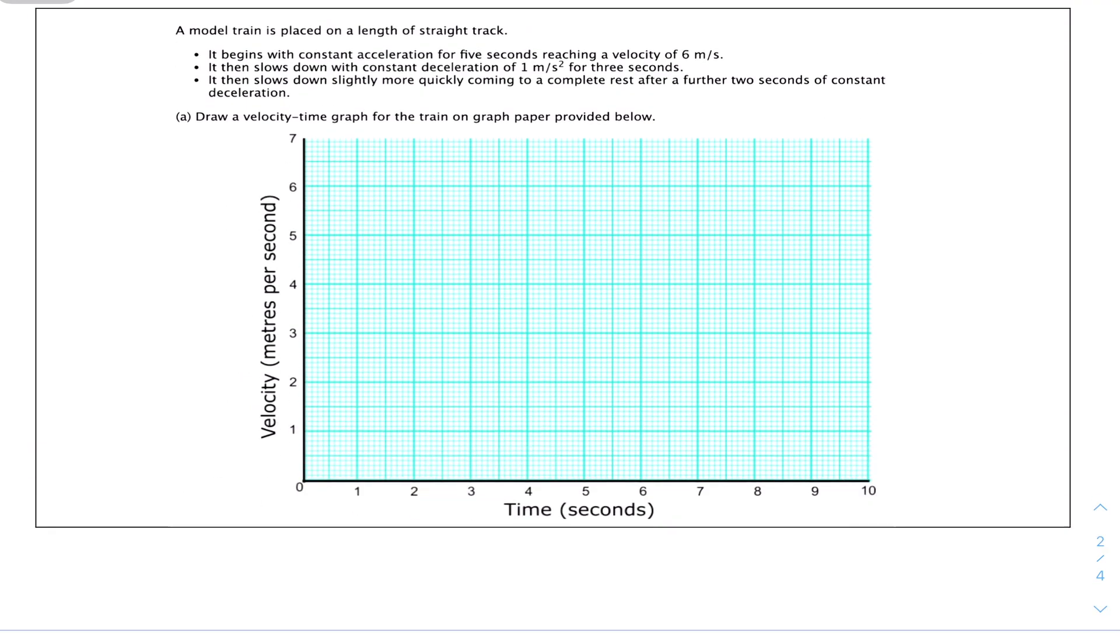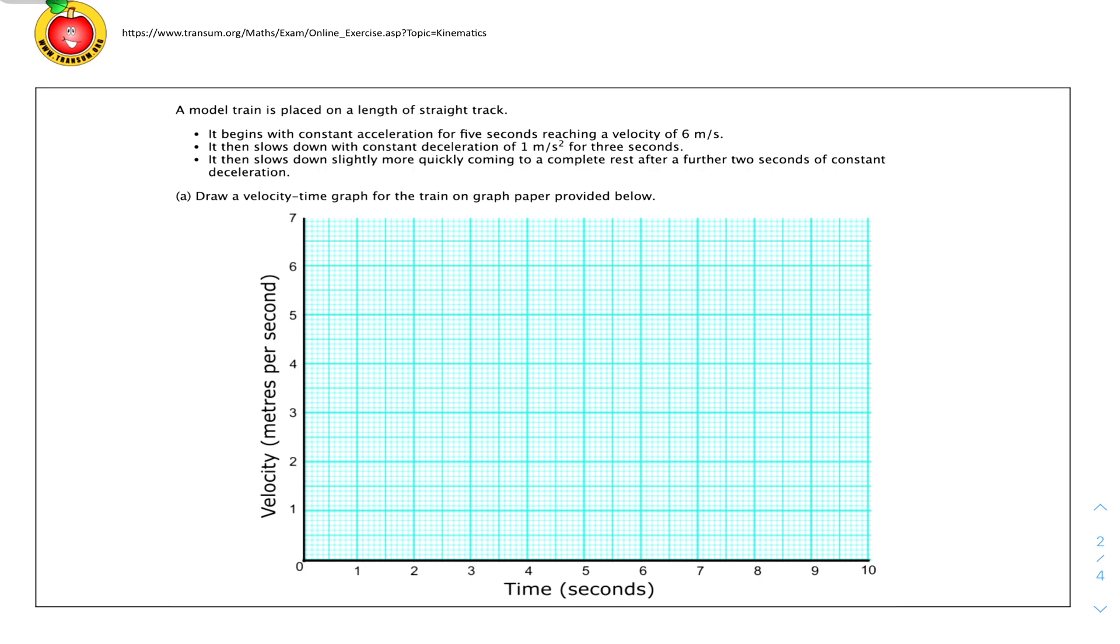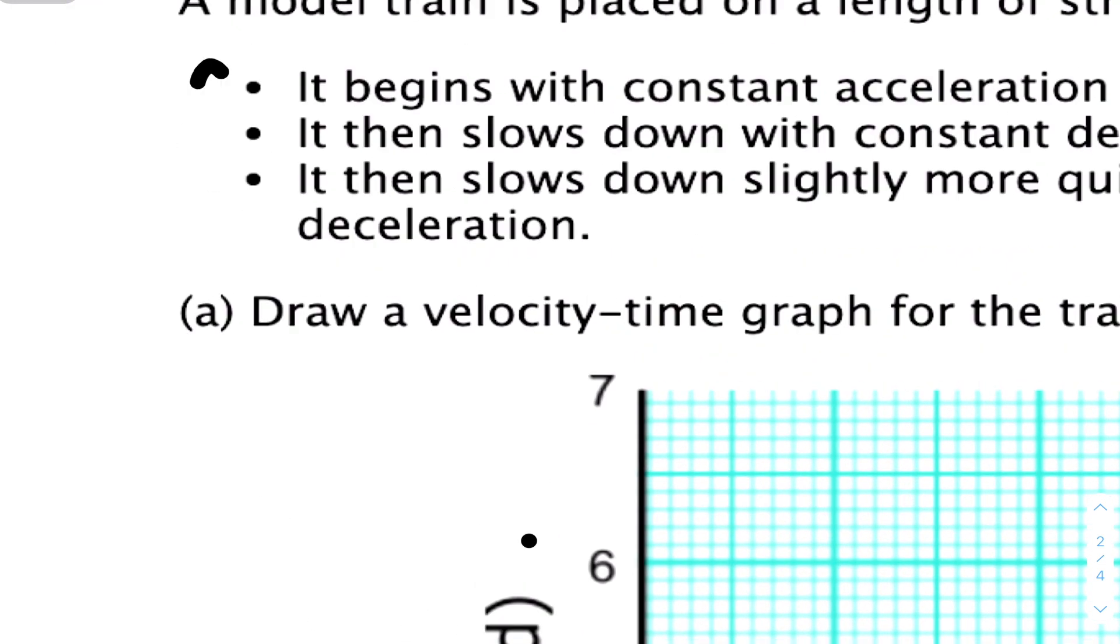Part 2. A model train is placed on a length of straight track. It begins with constant acceleration for 5 seconds after reaching a velocity of 6 meters per second. We need 5 seconds here and velocity of 6. We know it starts from rest, so it goes through the origin to 6 meters per second. Starting from the origin, it goes from here. Let's label it as a, b, and c. This part here is a.